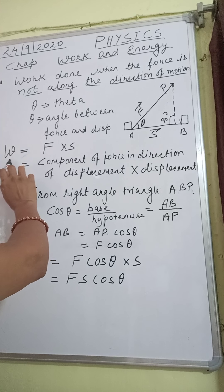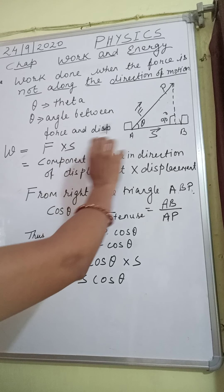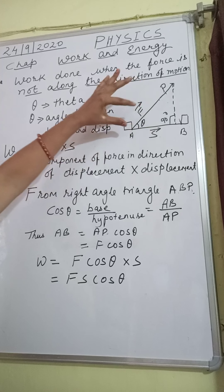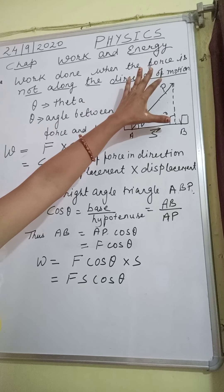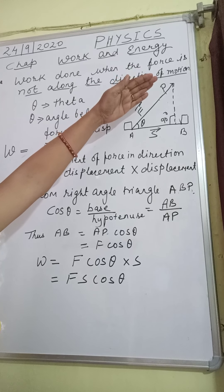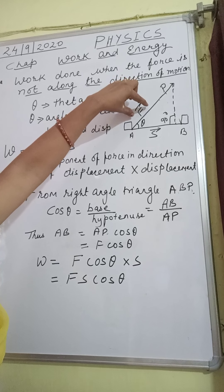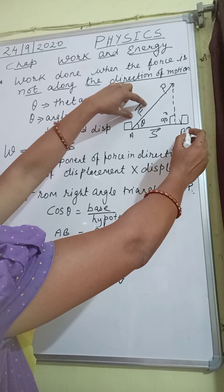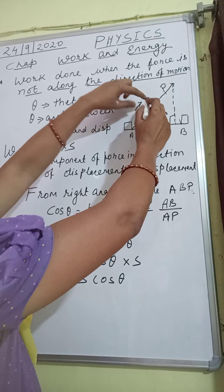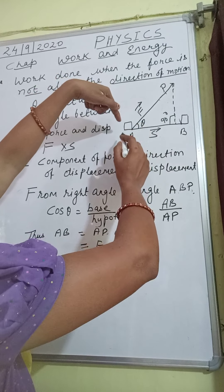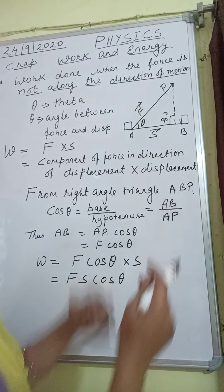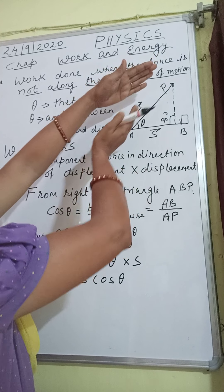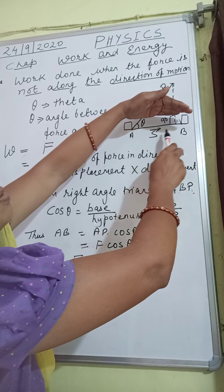We know that work done is equal to force multiplied by displacement. But how do we find the relation between force and displacement when both are in different directions — not in the same direction? Here we are going to find the horizontal component of force, and relate the force with the horizontal component, or relate the displacement with the vertical component. We have to find out the relation of force and displacement, so I drop the component of force in the horizontal direction of displacement.